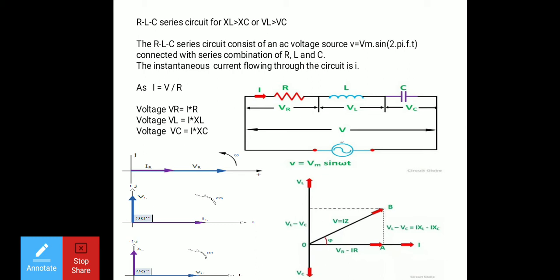Due to the supply voltage, there is a flow of supply current i, which is the instantaneous current. That same current flows through resistor R (called iR), through inductor L (called iL), and through capacitor C (called iC). Due to current flow, voltages develop across each component: VR across R, VL across L, and VC across C.